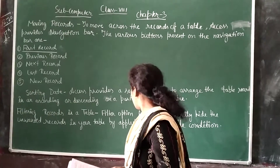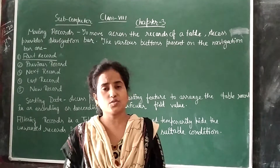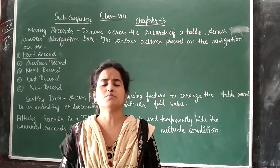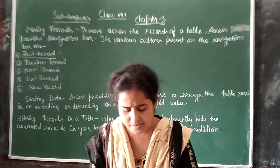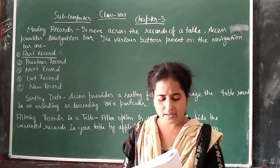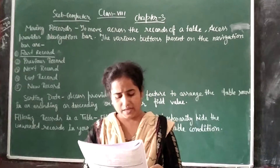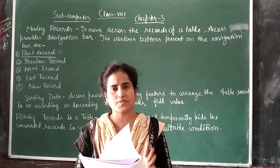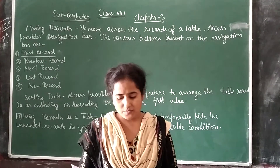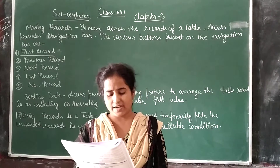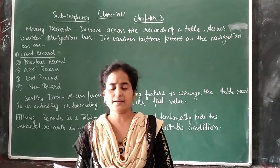Filtering records — the filter option is used to temporarily hide unwanted data that you don't want to display at the present time. To create a simple filter, open page number 39. Step 1: open the table in a datasheet and click the drop-down arrow in the field header on which the data is to be filtered. A checklist will appear — uncheck the values you don't want to display and click the OK button to display only the selected records.